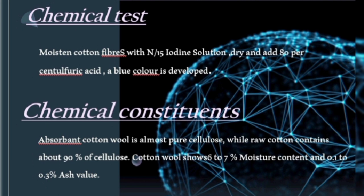Then chemical constituents: absorbent cotton wool is almost pure cellulose, while raw cotton contains about 90% cellulose. Cotton wool shows 6 to 7% moisture content and 0.1 to 0.3% ash value.